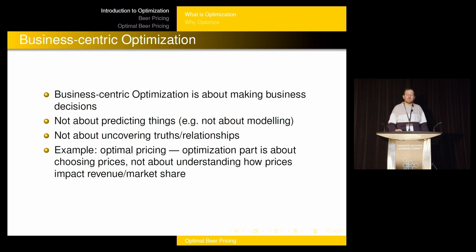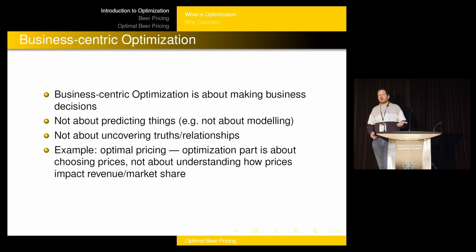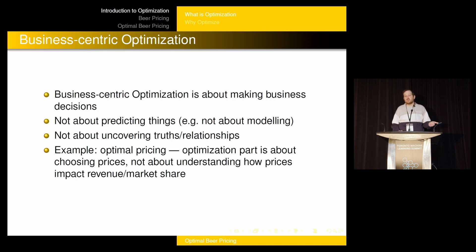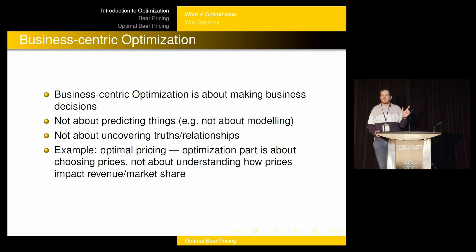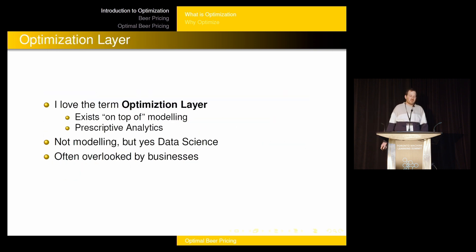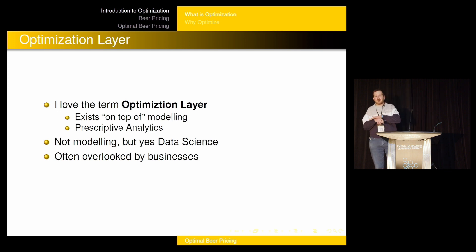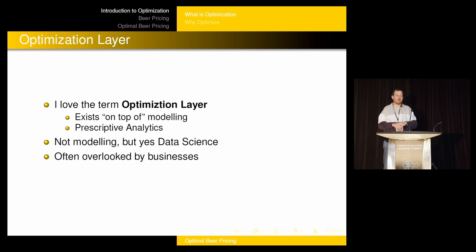It's about making the right business decision. In optimal pricing, the optimization part is about choosing the prices — not about understanding what raising a price will do to revenue or demand. That's important and we need to know it, but it's not what the optimization is about. The optimization is about: once I believe I know that relationship, how do I choose the prices? For that reason, I love the term 'optimization layer' — it's a layer that sits on top of the model.